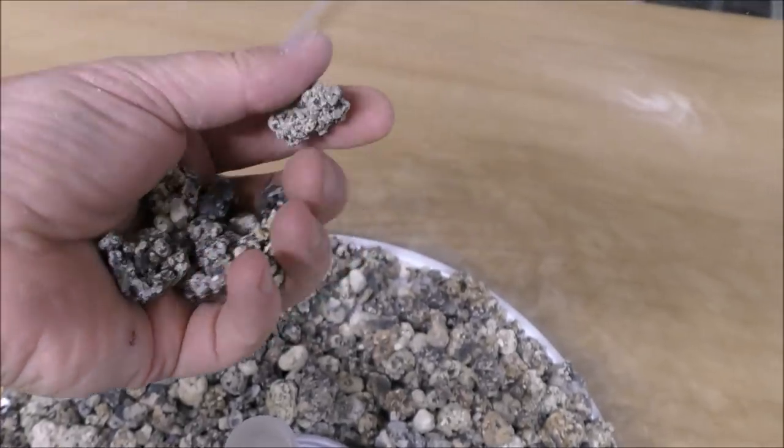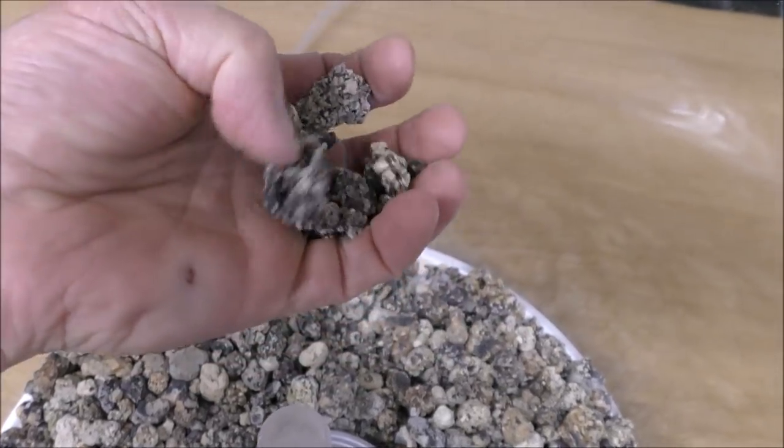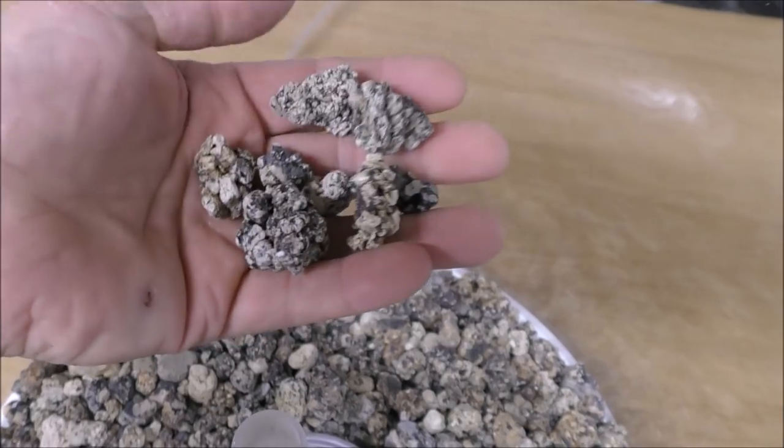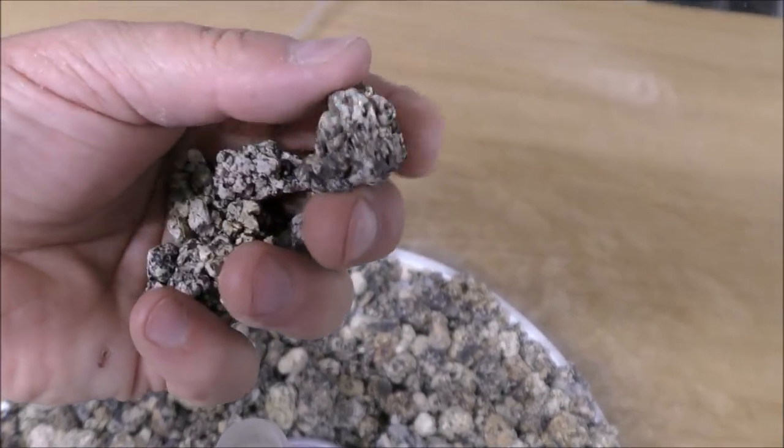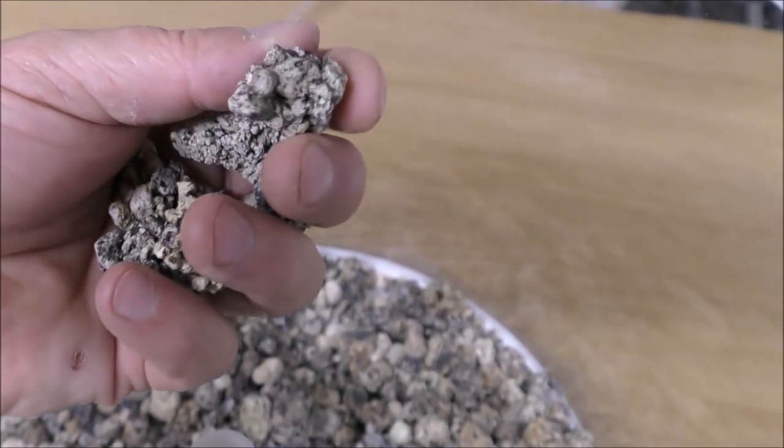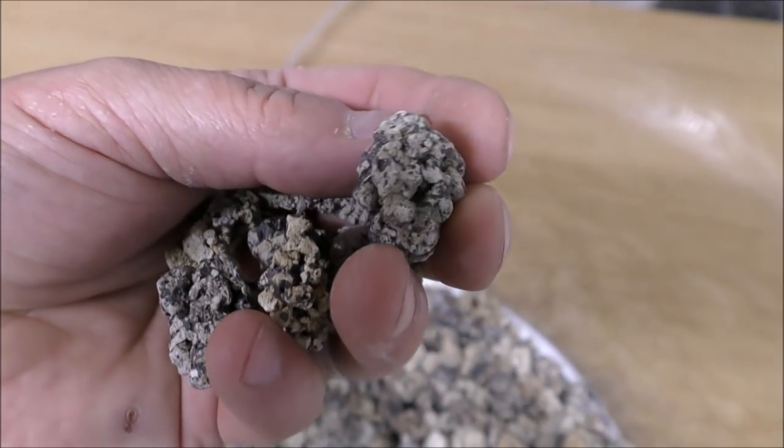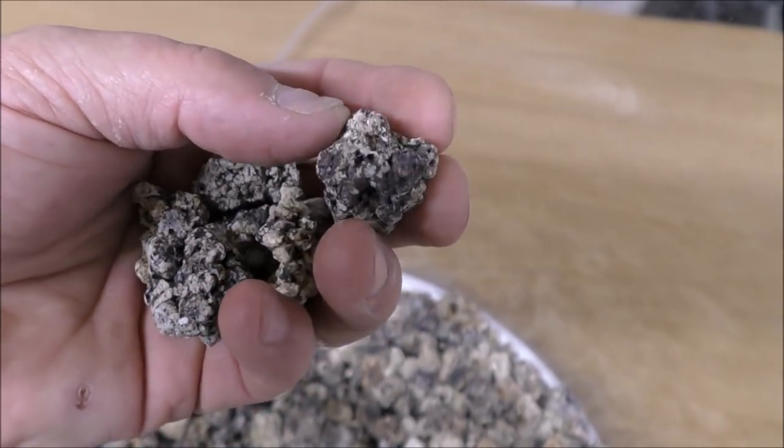And although I'm going to tell you why it isn't suitable for this situation, this is a really good cheap media for Koi filters, anywhere where the media is going to be sitting in filth. Because the vast majority of the surface area on this is external. It's exceptionally knobbly, so you do have a really good external surface area.